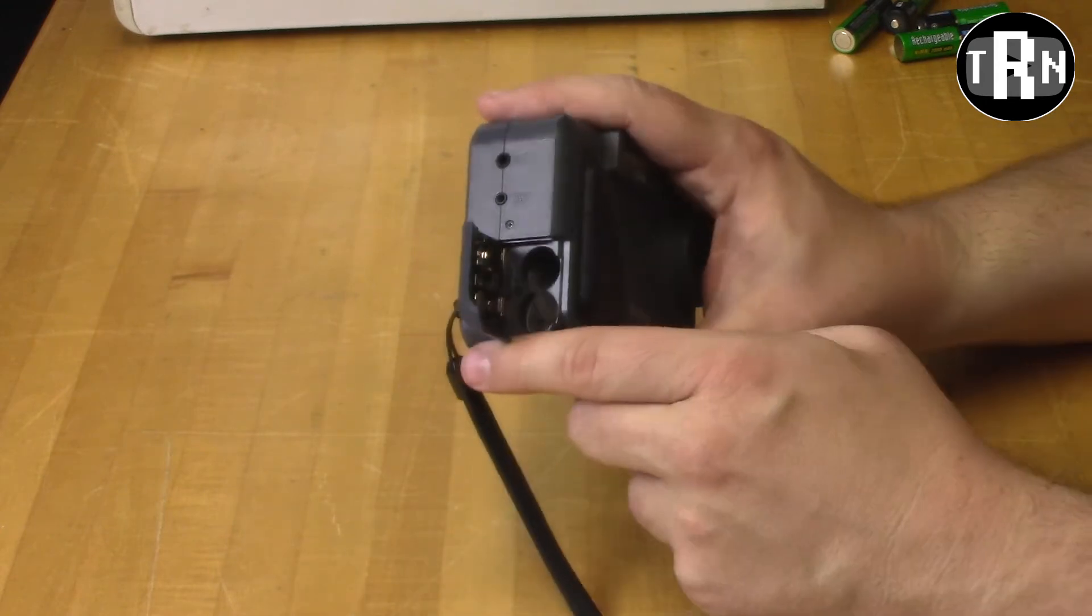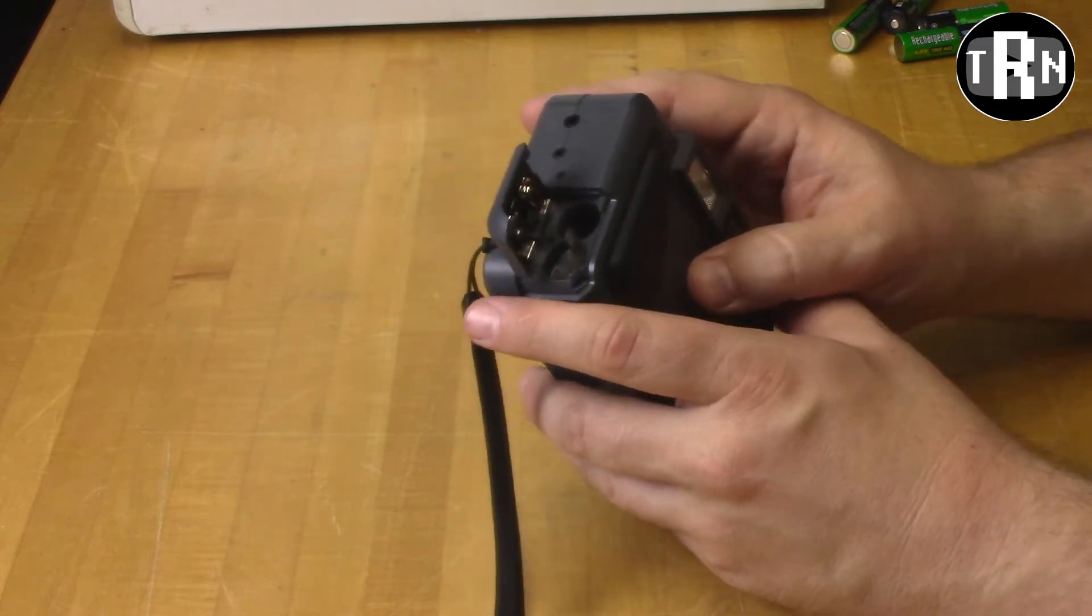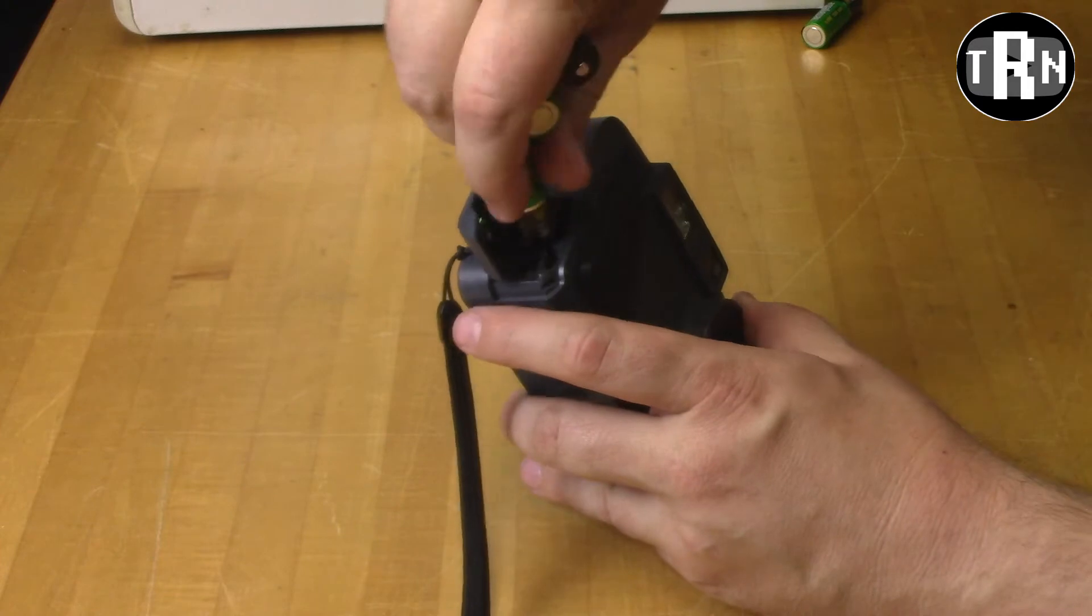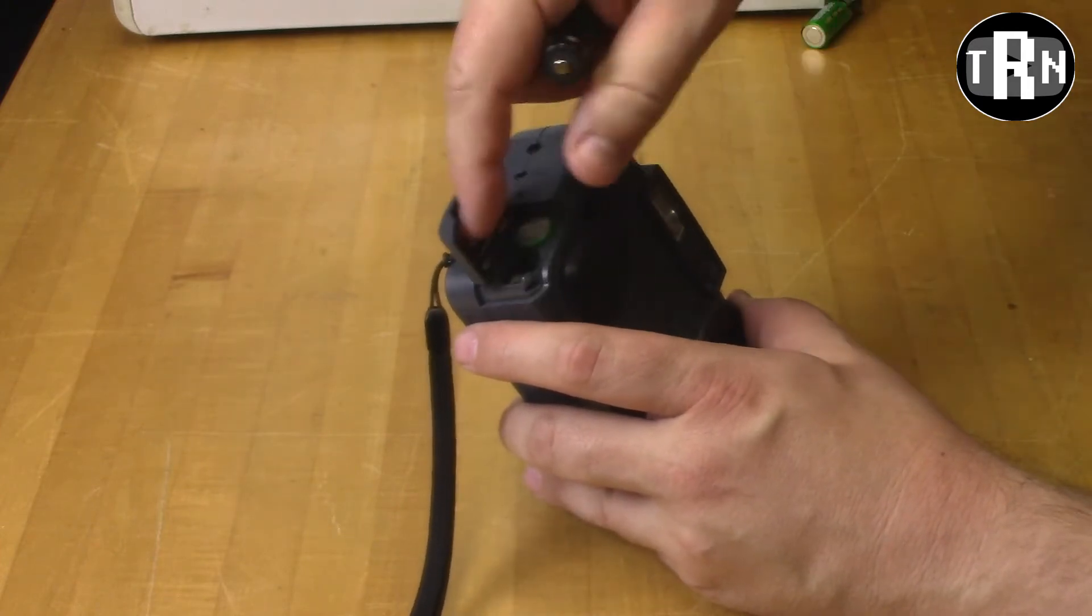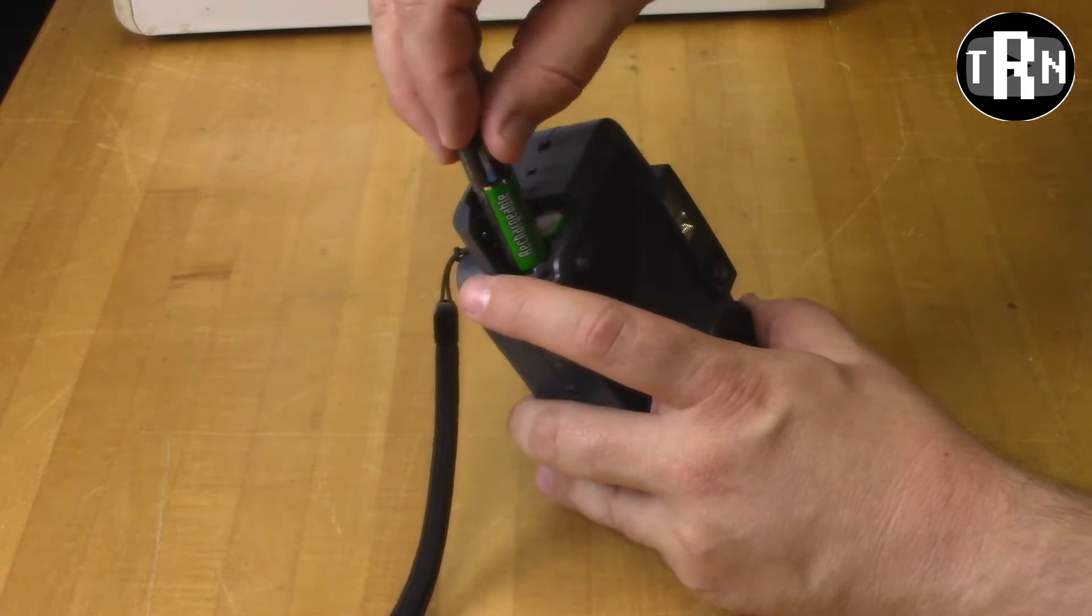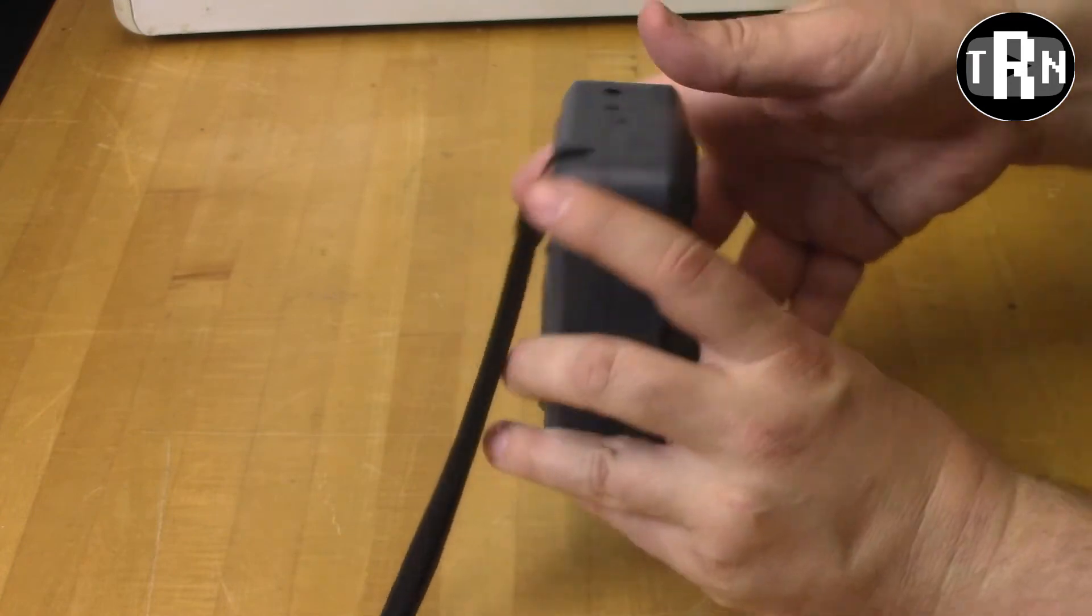Again, the batteries go right here. It looks like it takes two double A's, but looks can be deceiving as it actually takes four double A's. I'm assuming with it taking four double A's, that adapter on the side is probably for a typical six volt power supply, which I don't think it did come with.